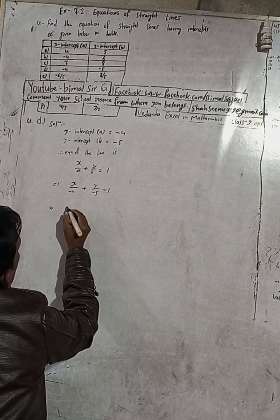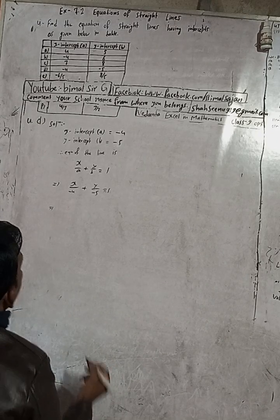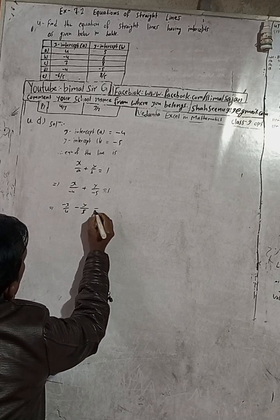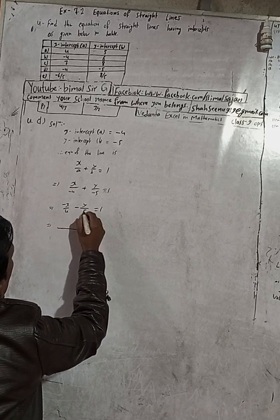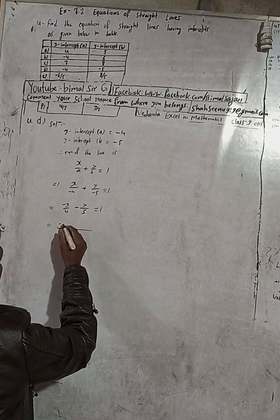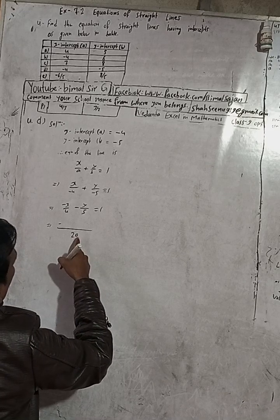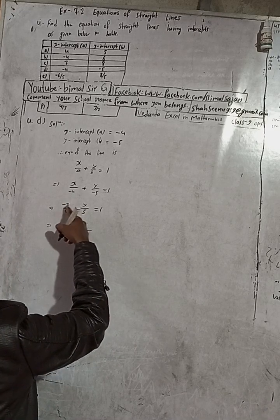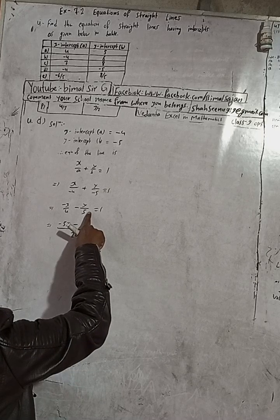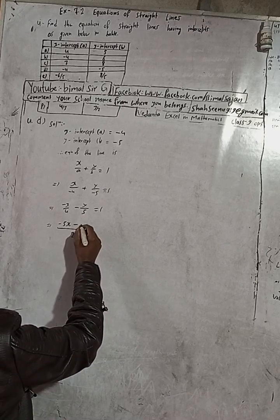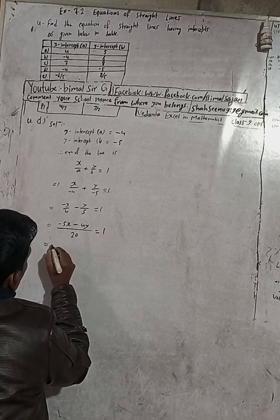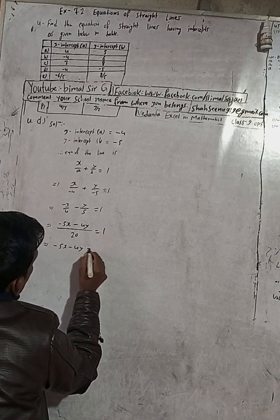This can be written as minus x/4 minus y/5 = 1. The LCM of 5 and 4 is 20. Multiplying through by 20: dividing 20 by 4 gives 5, so we get 5x; dividing 20 by 5 gives 4, so we get 4y. Therefore minus 5x minus 4y = 20.